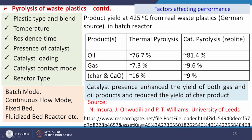Factors affecting pyrolysis performance include: plastic type and blend, temperature, residence time, presence of catalyst, catalyst loading, catalyst contact mode, and reactor type — batch mode or continuous mode with fixed bed or fluidized bed reactor. At 425°C from real waste plastics in a batch reactor: thermal pyrolysis gives 76.7% oil, 7.3% gas, and 16% char; whereas catalytic pyrolysis gives 81.4% oil, 9.6% gas, and reduced char. Catalyst presence enhances yield of both gas and oil products and reduces char yield.